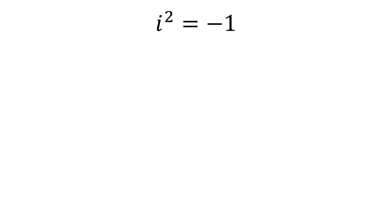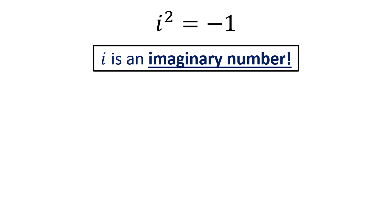We define i squared as equaling negative 1. Now technically there is no real number that can be squared to get negative 1, which is why we call i an imaginary number.